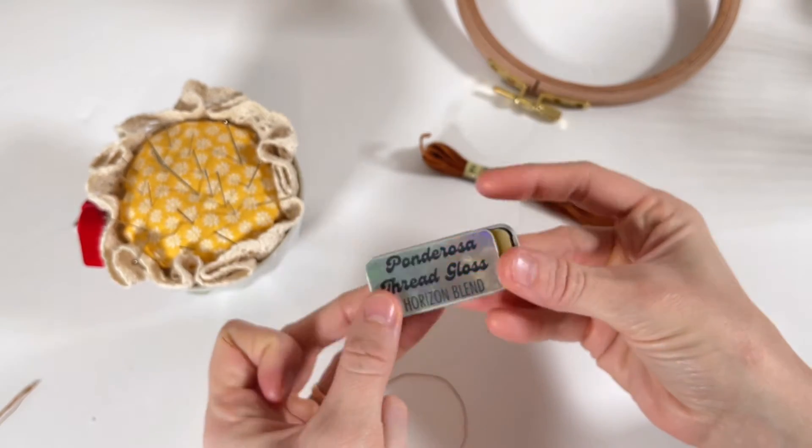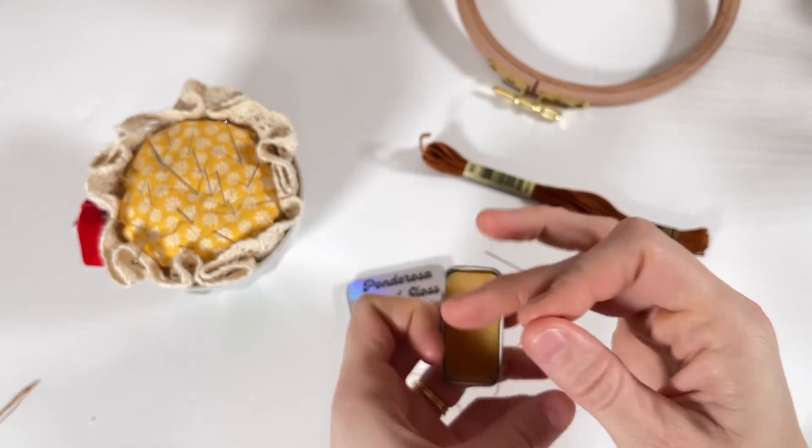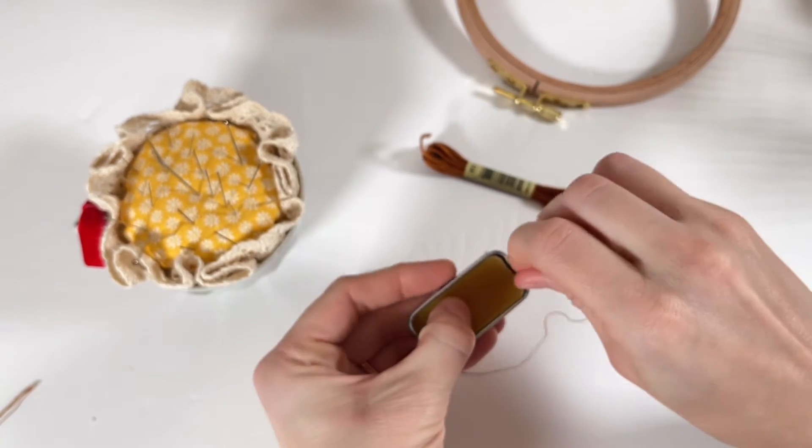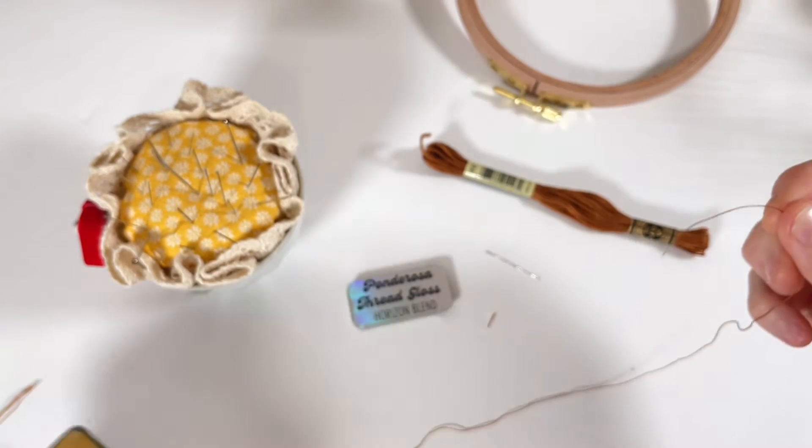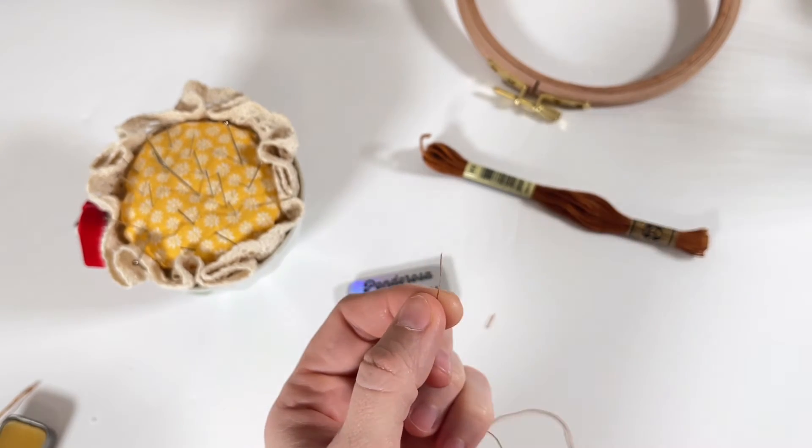This next thing isn't required but I do think it's helpful to use some sort of thread gloss or beeswax. It will help to stiffen the thread a little bit and control some of the fuzzies. Run it through the thread gloss or moisten the end with your mouth.